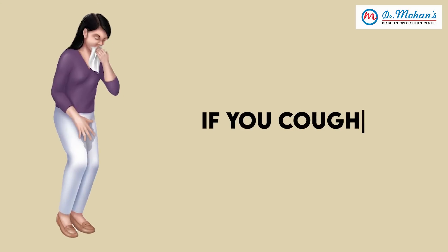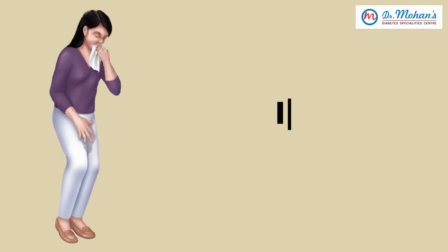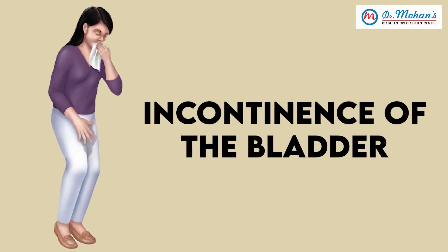The bladder becomes big, a lot of urine accumulates, and sometimes urine will come out even without your knowledge. If you cough, there may be urine coming out — we call this incontinence of the bladder. It is very embarrassing: suddenly you cough and urine comes out. This can happen in both men and women. Therefore the bladder is a very important organ to look after when you are having your checkup for diabetes.